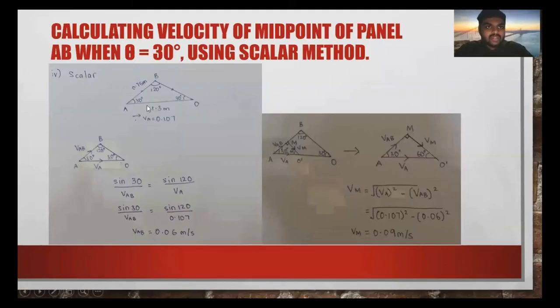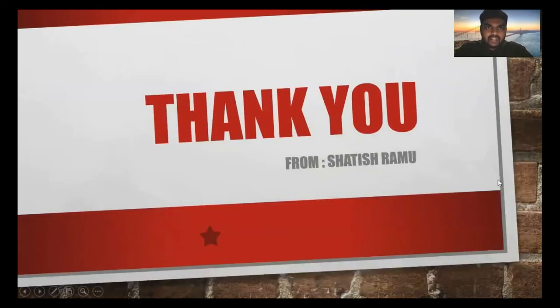Now I use the scalar method to find the velocity of M. We have VA here. We have to find VAB. Using this method, VAB is 0.06 meters per second. Using VAB and VA, we can find velocity of M, which is 0.09 meters per second. All the methods show the same velocity, which is 0.09 meters per second.